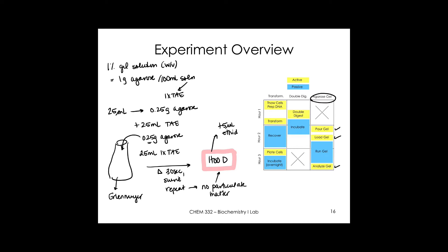In the hood, add 5 µL of ethidium bromide. This is a known mutagen — it intercalates between DNA bases and fluoresces, allowing visualization. Handle it carefully in the hood. After adding ethidium bromide, pour the gel into the casting tray.